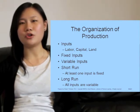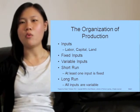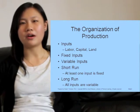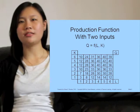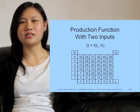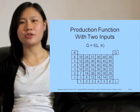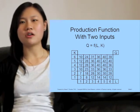The time period during which at least one input is fixed is called the short run, while the time period when all inputs are variable is called the long run. A production function is an equation, table, or graph showing the maximum output of a commodity that a firm can produce per period of time with each set of inputs.